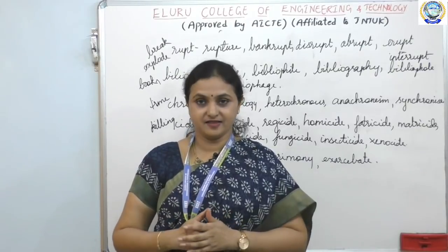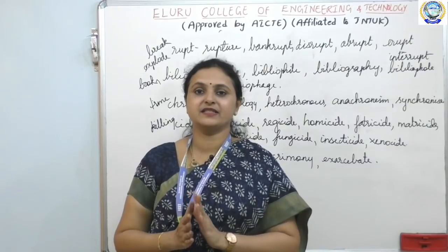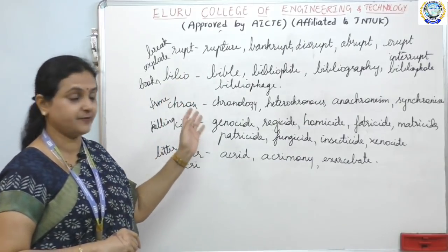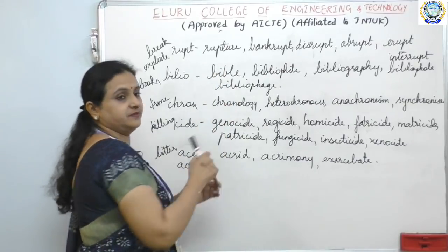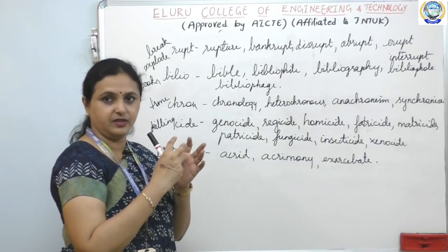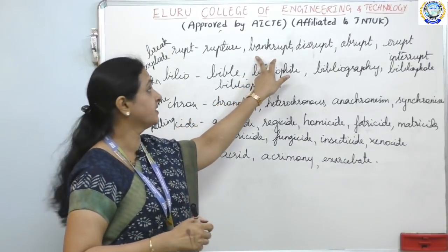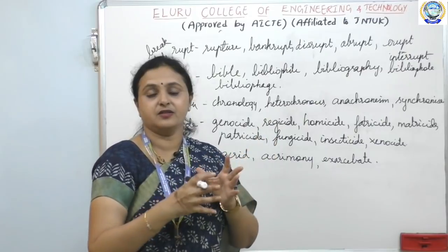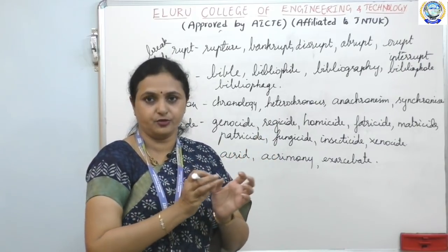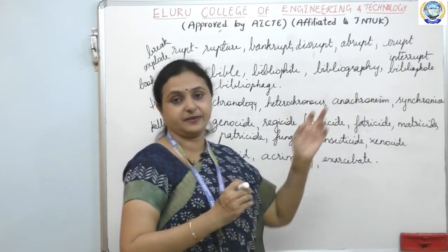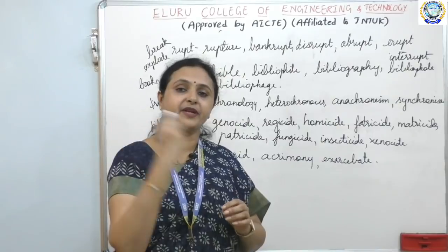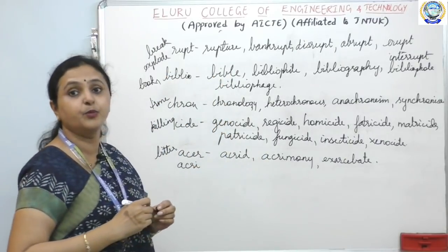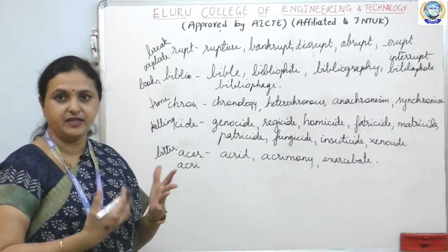Rupt means to break or explode. Rupture — when something breaks and is not smooth. Bankrupt. Disrupt — when you break the continuation. Abrupt — suddenly intrude. Irrupt — burst out. Interrupt — break what's going on, break the silence or the talk. Biblio means books, like the Bible itself is a book.